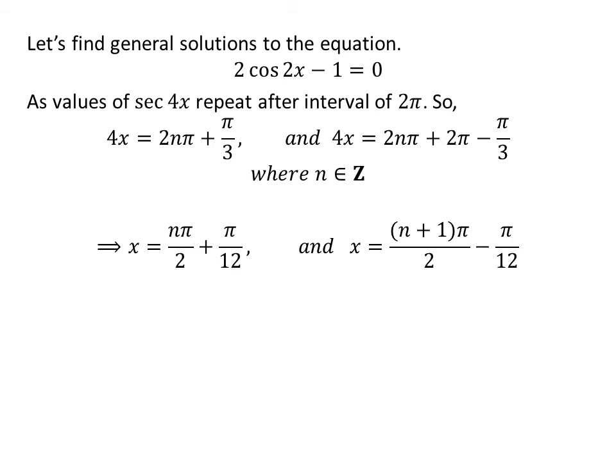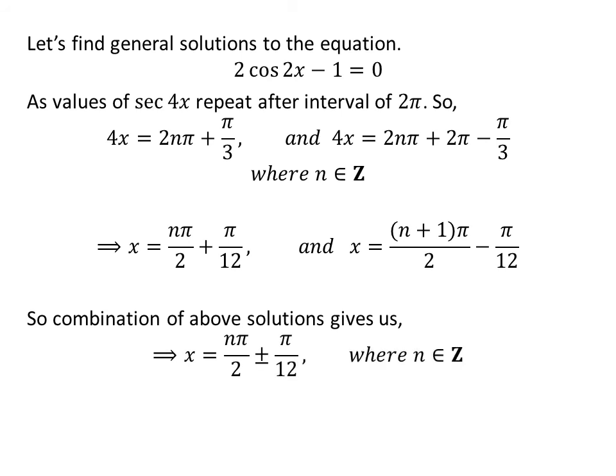Division of both equations by 4 and further simplification gives us the general solutions are nπ/2 + π/12 and (n+1)π/2 - π/12. Combination of the above solutions gives us the general solution of the equation is nπ/2 ± π/12, where n is an integer.